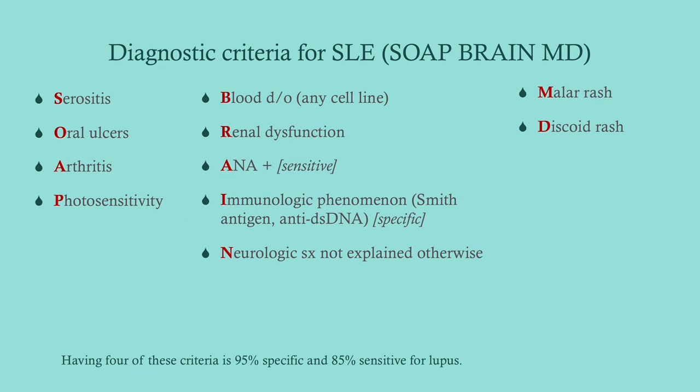Here are the diagnostic criteria, and the mnemonic is SOAP BRAIN MD. There are other mnemonics you might find helpful — you can rearrange the letters in different ways — but this is the one I was taught. Look for serositis, which can be pleurisy as a presenting sign; oral ulcers, which are aphthous ulcers or canker sores; arthritis as mentioned; photosensitivity — basically a photosensitive rash; blood disorders, usually anemia but it can be lymphopenia or thrombocytopenia or all of them; and renal dysfunction — look for an elevated BUN and creatinine, casts, and protein in the urine, indicating something wrong at the level of the glomeruli.